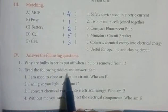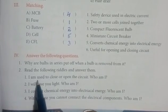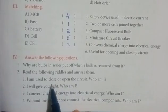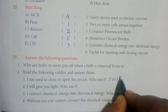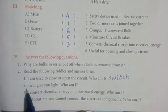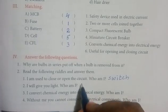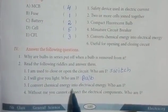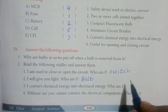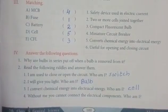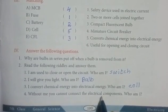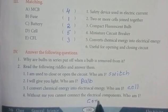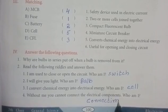Second question: Read the riddles and answer them. 'I am used to close or open the circuit. Who am I?' — Switch. 'I will give you light. Who am I?' — Bulb. 'I convert chemical energy into electrical energy. Who am I?' — Cell. 'Without me, you cannot connect the electrical components. Who am I?' — Connecting wire.